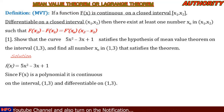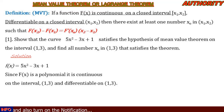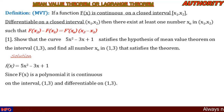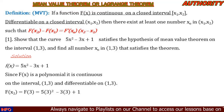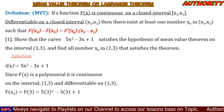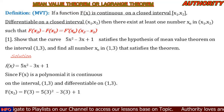Now let's find f(x2). In the interval we have 1 and 3, so we take x1 = 1 and x2 = 3. Let's find f(x2): f(3) = 5(3)² − 3(3) + 1.